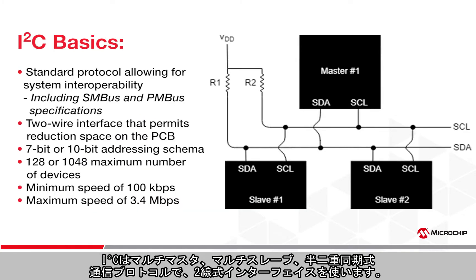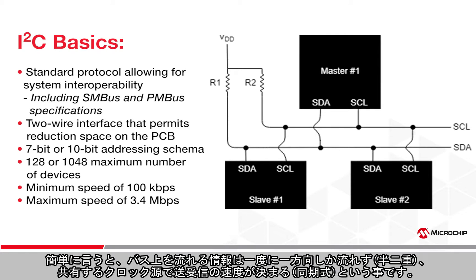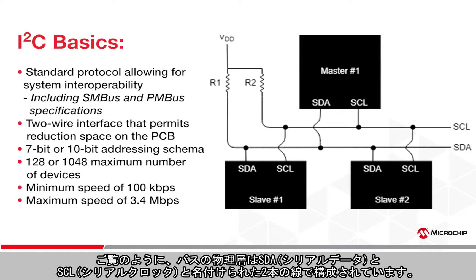I2C is a multi-master, multi-slave, half-duplex synchronous communication protocol over a two-wire interface. This basically means that information is only permitted to travel in one direction on the bus at any given time, and that one clock source will be shared between devices, determining how quickly we can send communication back and forth. You can see the physical layer of the bus set up with two wires labeled SDA for serial data and SCL for serial clock.